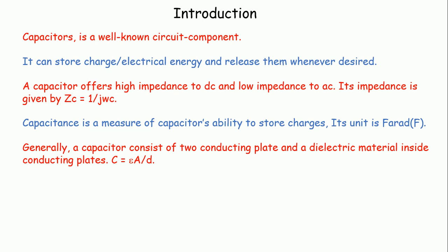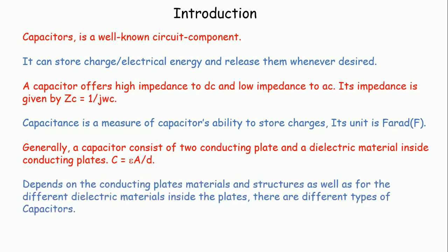In general, a capacitor consists of two conducting plates and one dielectric material between them. Its capacitance is given by C = εA/D, where ε is the permittivity of the dielectric, A is the common area between two electrodes or plates, and D is the separation between the two plates. Depending on ε or the dielectric material, there are many types of capacitors. If we change the value of A, the common area, that gives rise to variable capacitors.